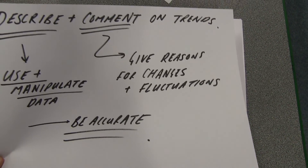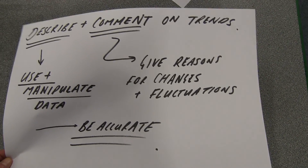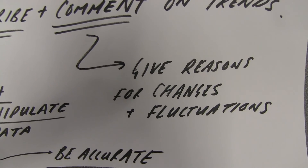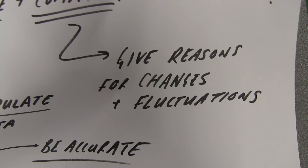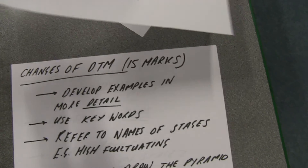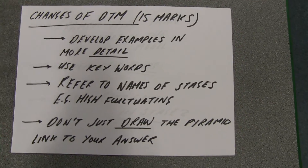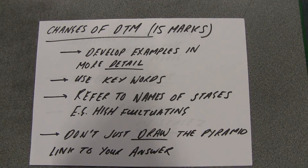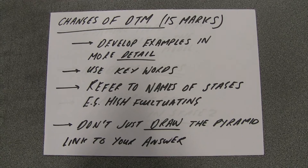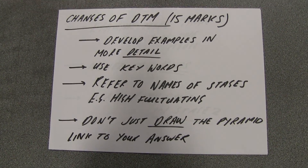For the majority of you, that was what meant you missed out on marks — you didn't explain the reasons why you might get those fluctuation changes. So when you redo that question it's going to be down to you to start thinking about what some of those reasons might be that could explain those population changes.